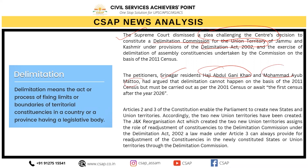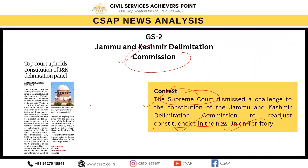The petitioners were Srinagar residents Haji Abdul Gani Khan and Muhammad Ayub Matu, who argued that delimitation cannot happen on the basis of the 2011 census but must be carried out as per the 2001 census or await the first census after 2026. Delimitation means the act or process of fixing limits or boundaries of territorial constituencies in a country or province having a legislative body.